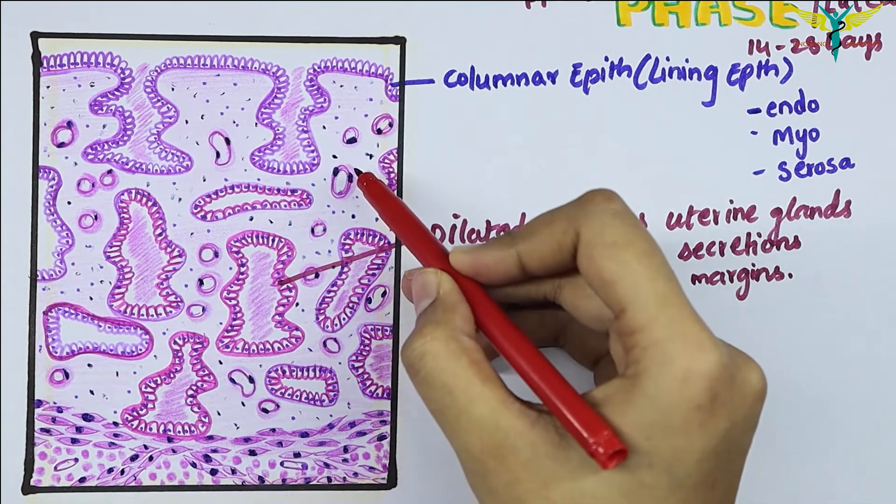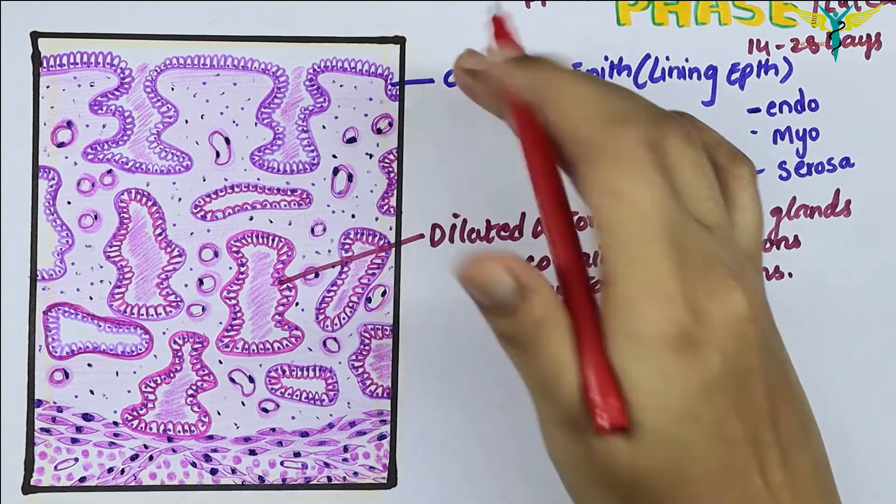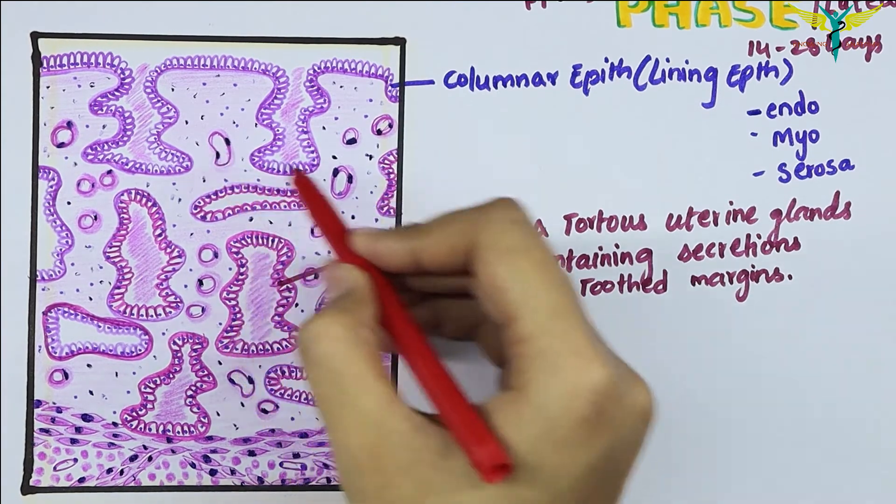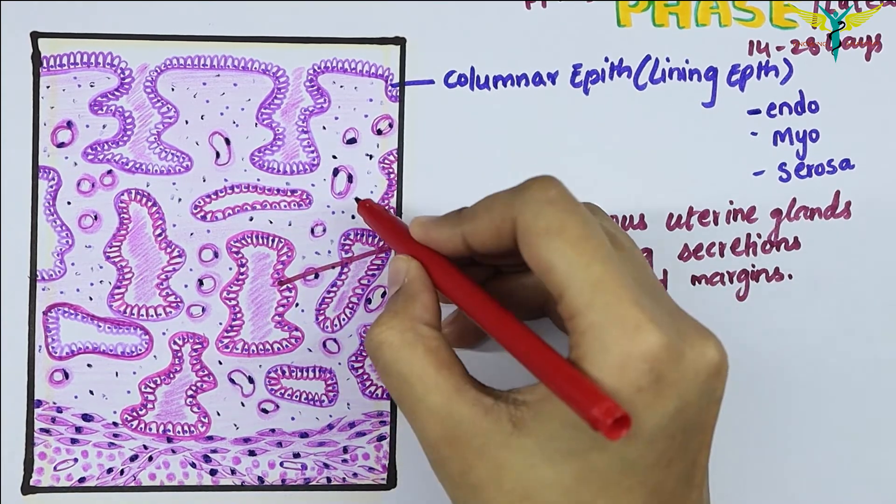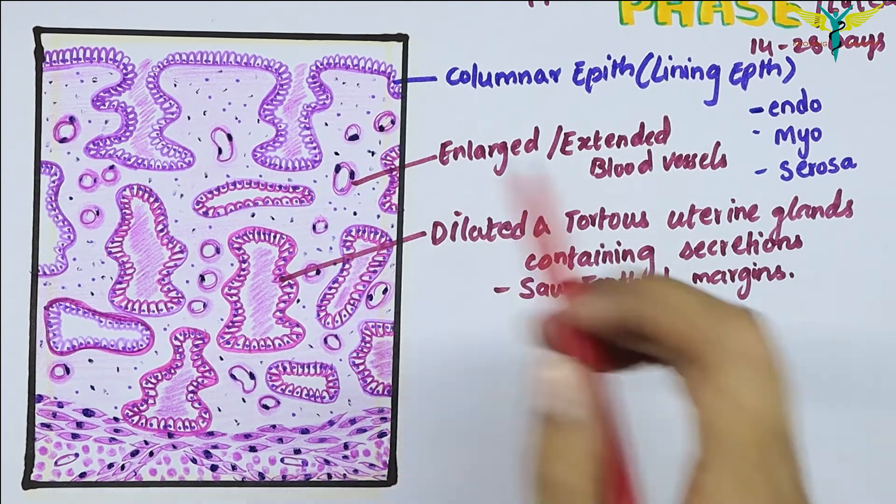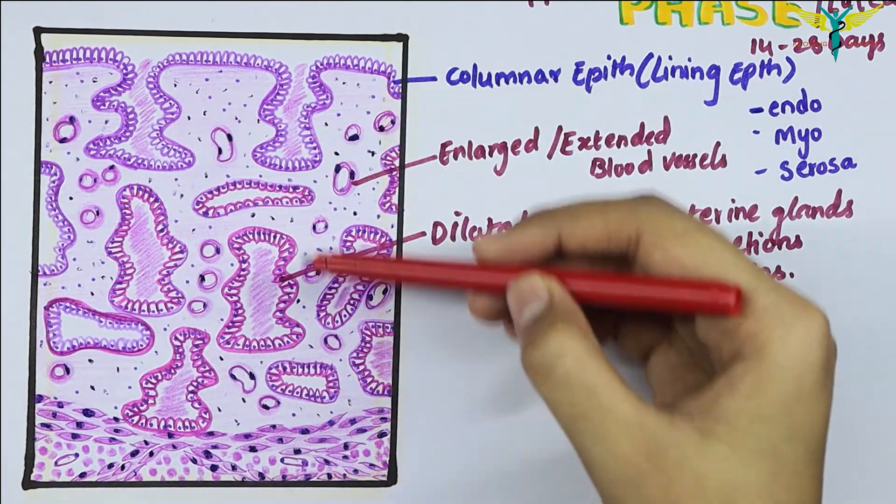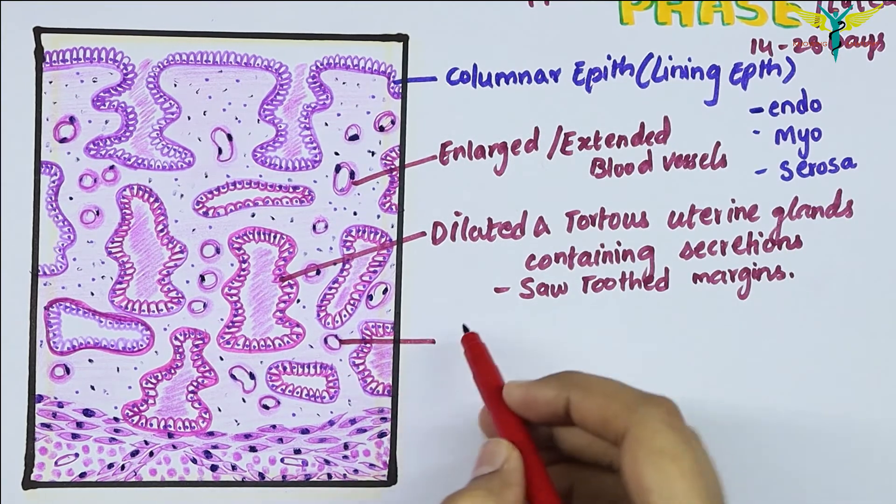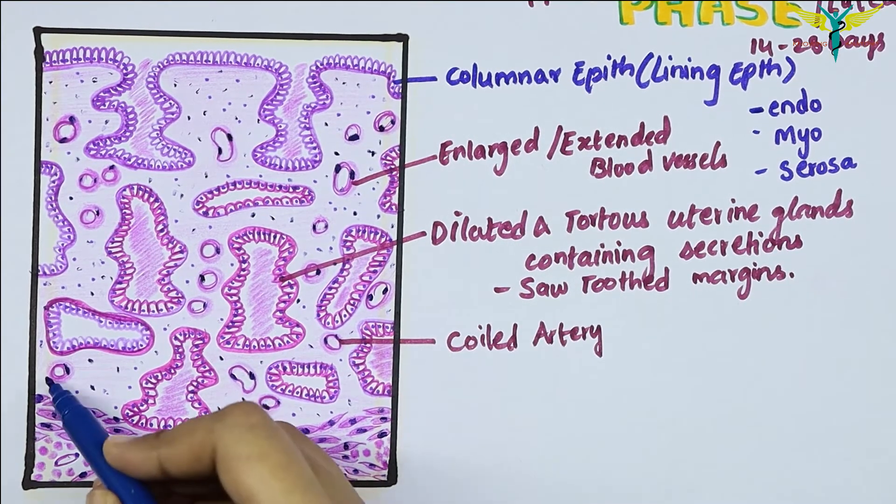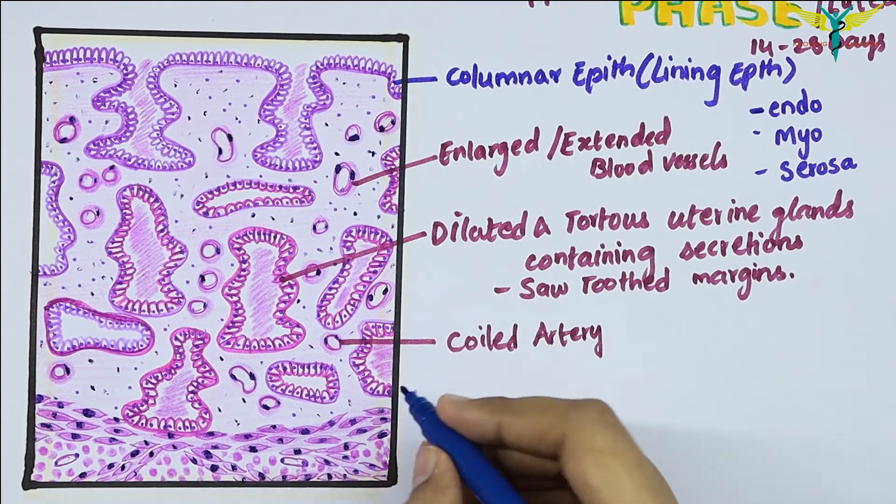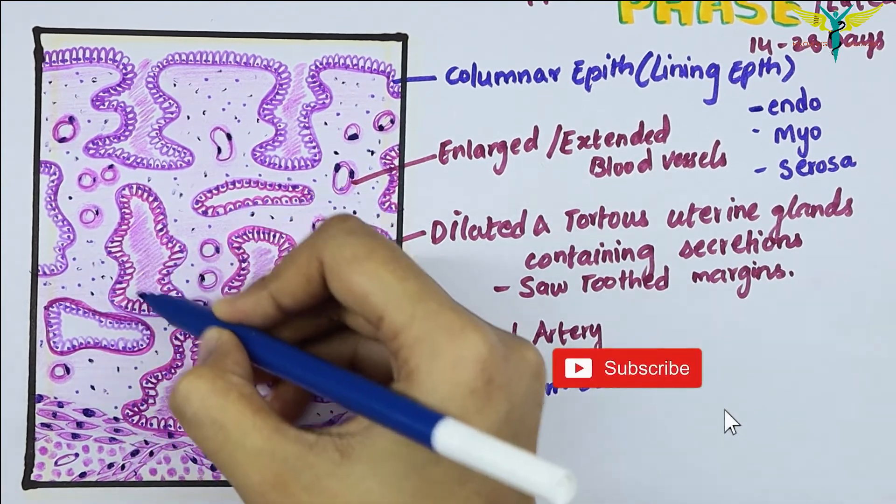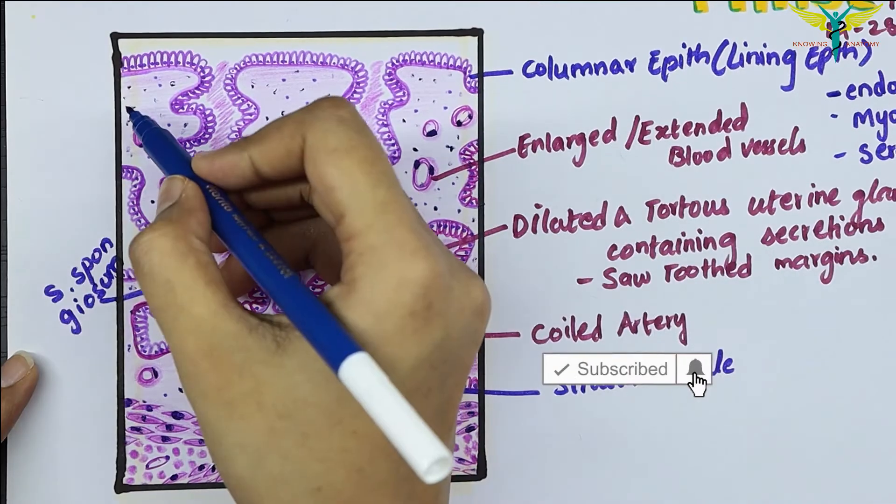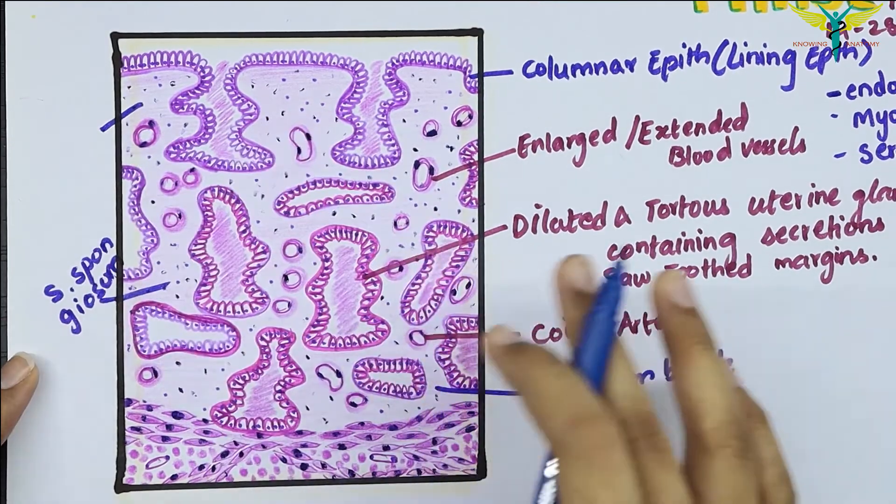You can see the expansion of the blood vessels in the upper portion of the endometrium. These are the enlarged blood vessels. Note the presence of many blood vessels which extend up to the top layer of the endometrium, and these are the coiled arteries. This is the basal part, called the stratum basale. This part is the stratum spongiosum, and this part is the stratum compactum.